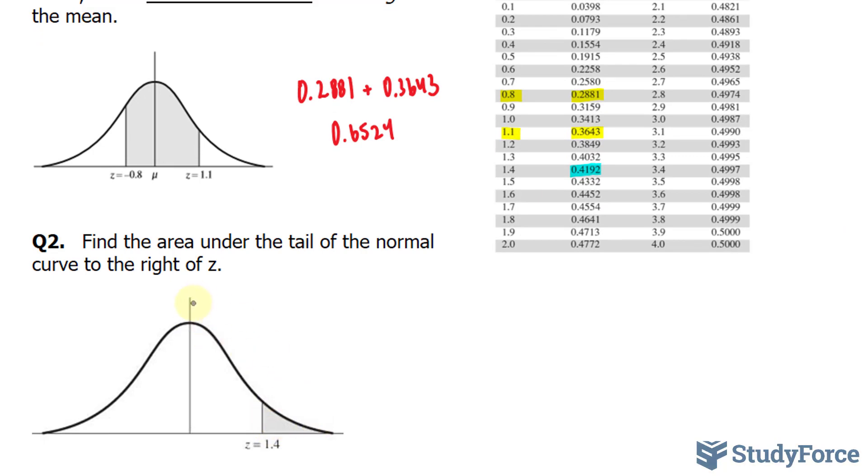Now from here to here is 0.5. So if we call this a and if we call this b, a plus b is equal to 0.5. This number represents the area here, but they want us to find out this area. So if we call a 0.4192 and solve for b, we will end up with our answer.